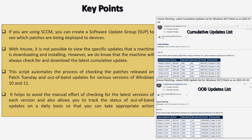With this video I will begin a series on automating Intune reports using PowerShell and the Graph API or using Power BI. In this video I am going to show you how to configure email notifications for the list of latest cumulative updates as well as out-of-band updates using PowerShell, and then how to create an email notification using Task Scheduler.